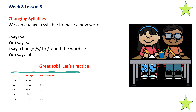Alright, let's change syllables or sounds. We can change a syllable or a sound to make a new word. Say sat — change the s to f and the word is fat. Let's practice. Say mop — change the m to t and the word is top. Say top — change the t to dr and the word is drop. Say drop — change the dr to fl and the word is flop. Say flop — change the fl to h and the word is hop. Say hop — change the h to b and the word is bop. Nice job.